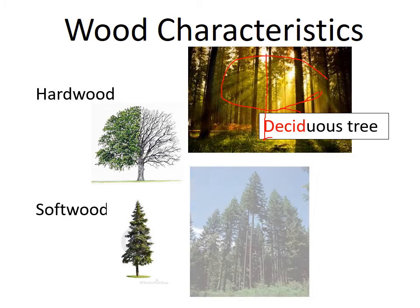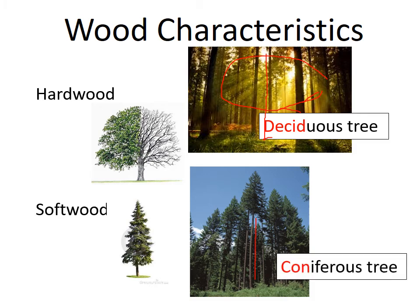A softwood tree is like that forest — big, tall trees with branches generally only on the top as you enter into the forest, for the same reason: it needs to grow tall to absorb the light. It's called a coniferous tree because it is a cone-bearing tree and keeps its needles year-round.